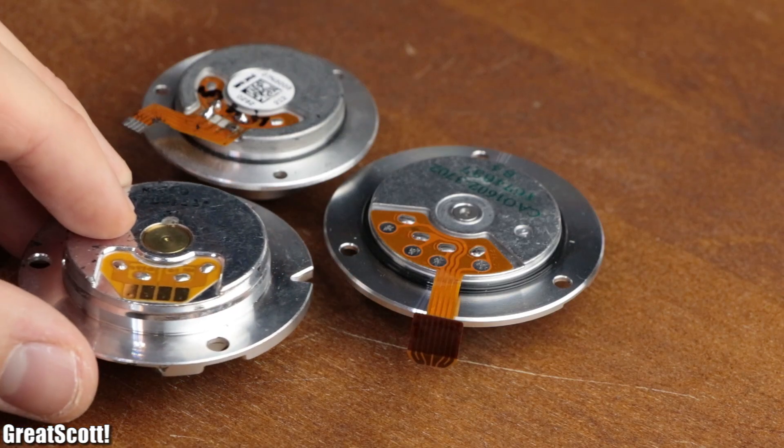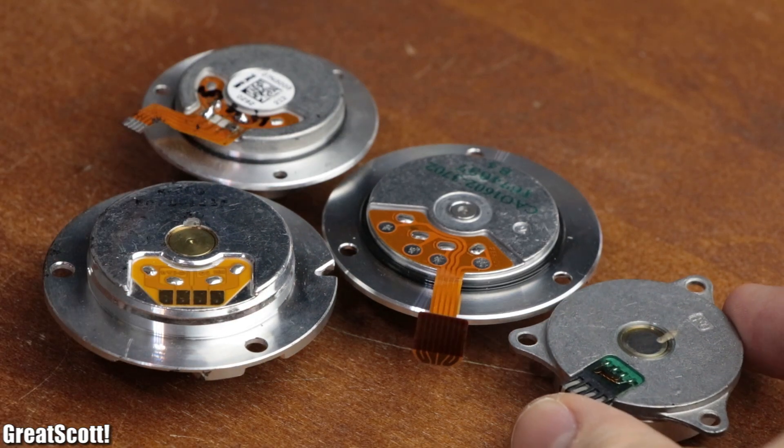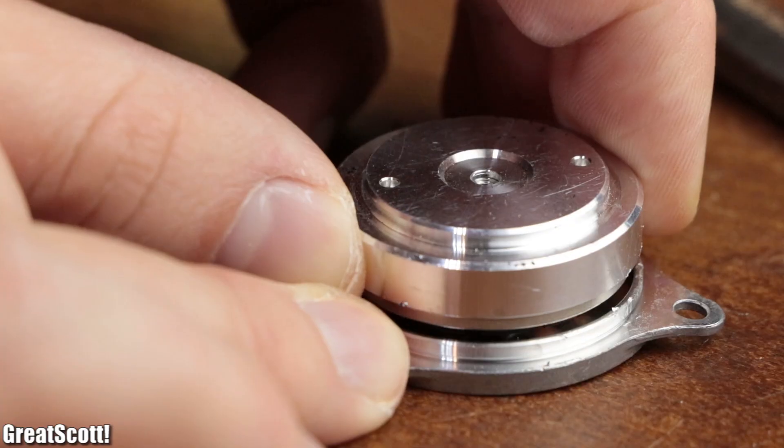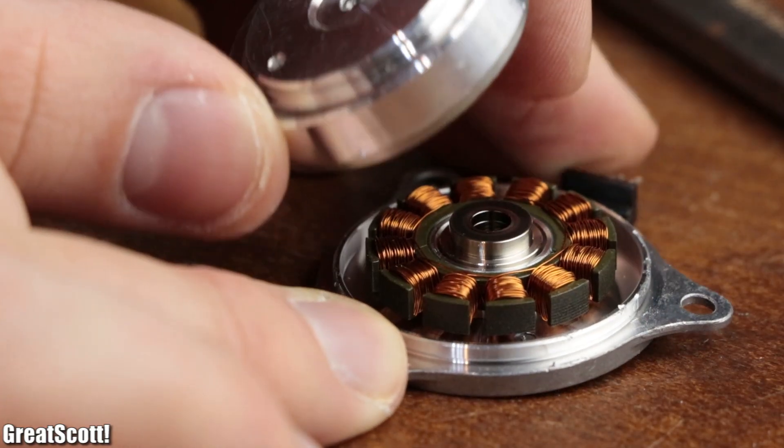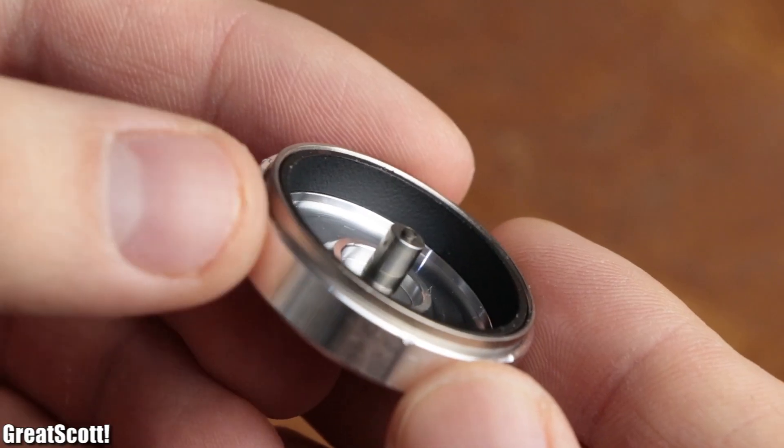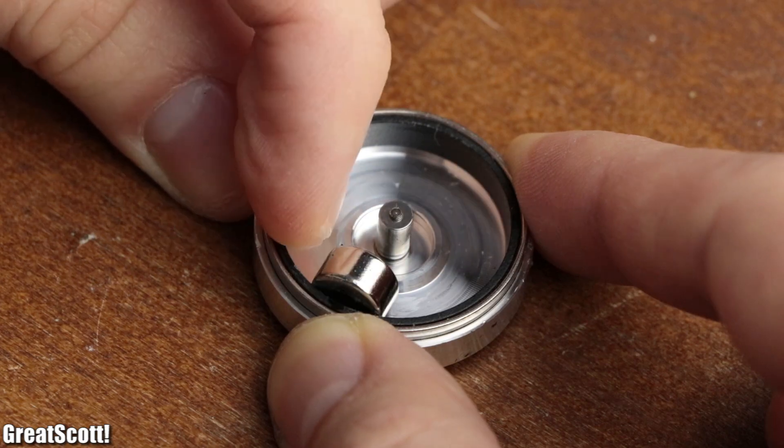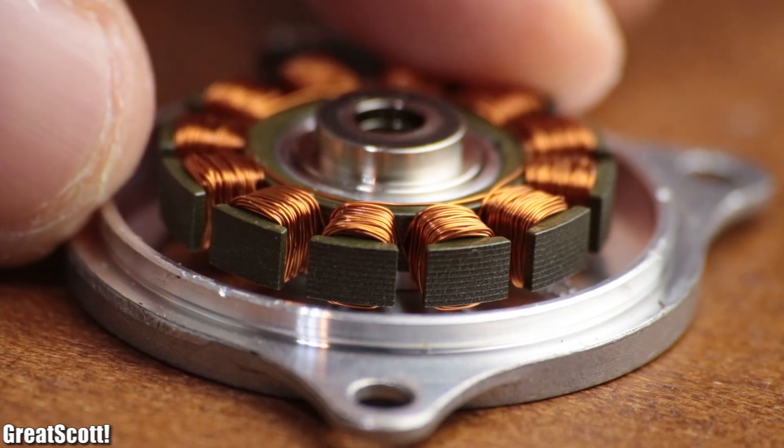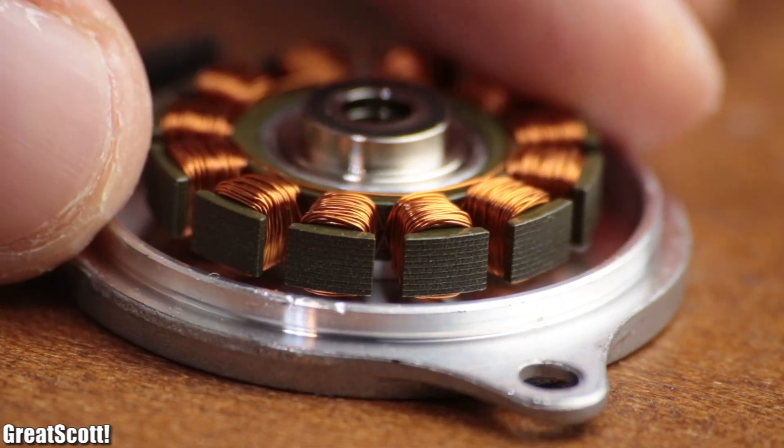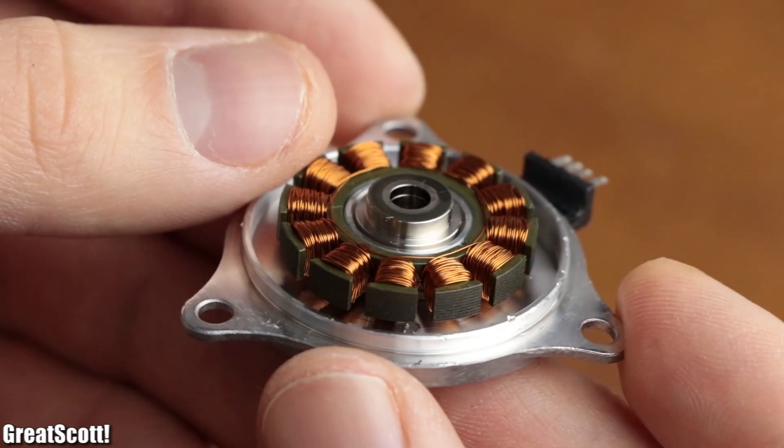Luckily, I had a couple of those laying around, so it was no problem to sacrifice one and break it open with a bit of force. On the inside we can see that the rotor consists of permanent magnets with alternating polarities, while the stator consists of copper wire wrapped around stator sheets in order to form coils.